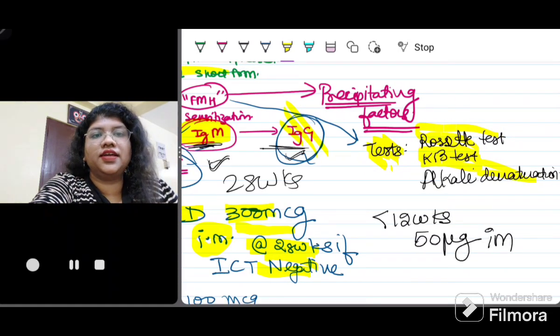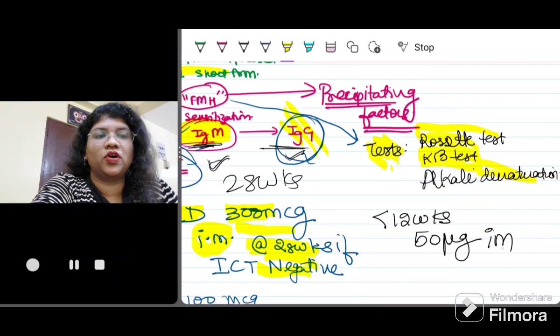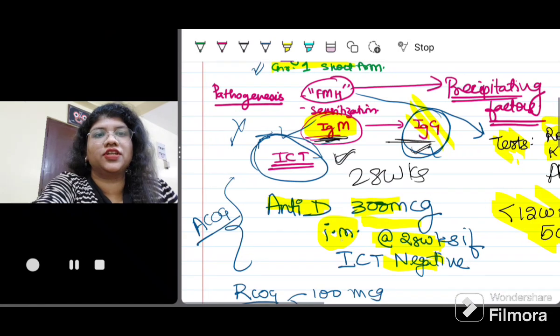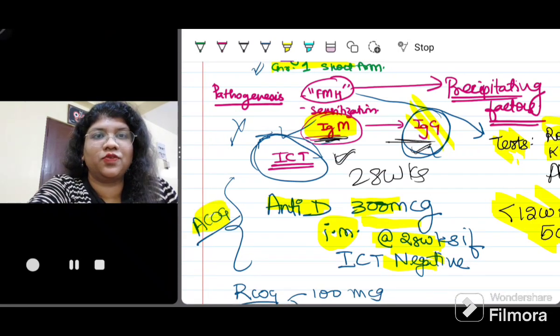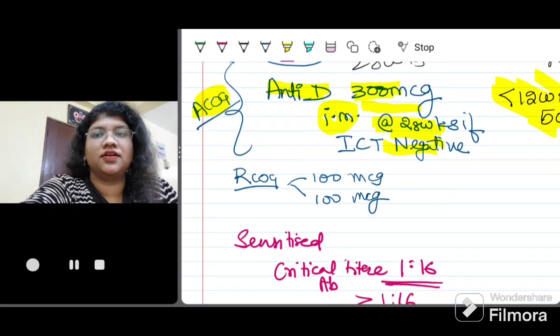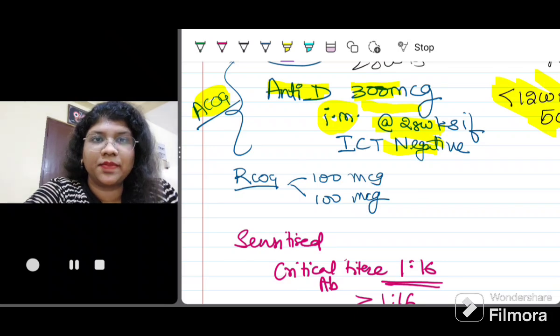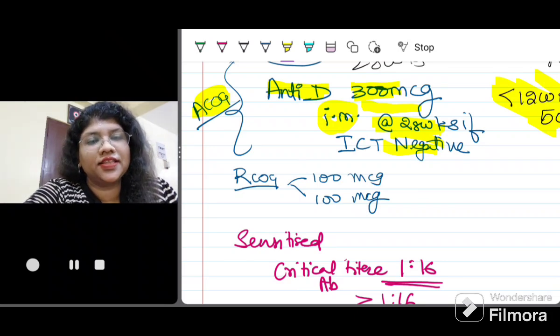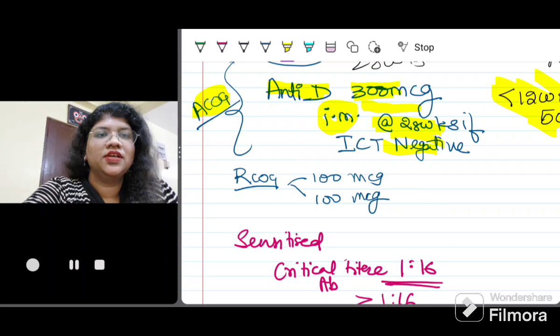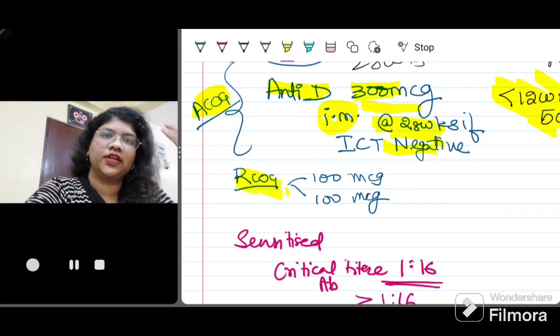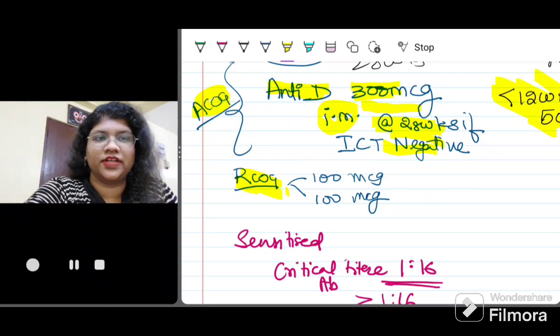Also if she is in her early trimester pregnancy loss or abortion less than 12 weeks, then you have to give 50 micrograms IM. This is the recommendation given by ACOG and this is what we routinely follow in our clinical practice. RCOG also has made its own guidelines. They tell that at 28 weeks you are going to give 100 micrograms and again at 34 weeks you are going to give 100 micrograms. This is important to know both the guidelines but ACOG is what we follow in our clinical practice and this is what is followed all over India.